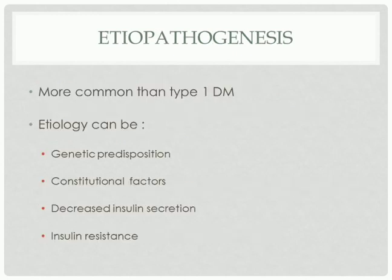The etiopathogenesis — there are four major etiologies in type 2 diabetes mellitus. There is genetic predisposition. If the family members have type 2 diabetes mellitus, especially the father, mother, grandfather or the grandmother, then the possibility of having type 2 diabetes mellitus in middle age is higher. And constitutional factors that we will discuss in the following slide. Decreased insulin secretion and insulin resistance.